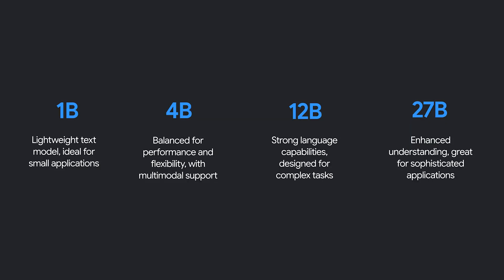Gemma 3 is a family of models with sizes ranging from 1 billion to 27 billion parameters. We spoke to the Gemma community and heard you. The community asked for a smaller, more accessible model, and we are thrilled to include the 1 billion parameter version in Gemma 3. This opens up even more possibilities for running AI on resource-constrained devices, giving you the flexibility to choose the perfect size for your project.